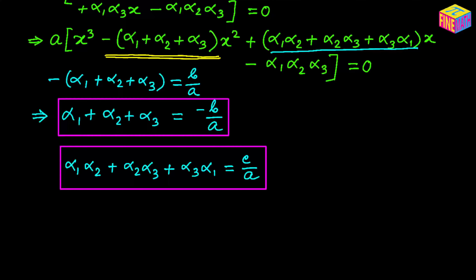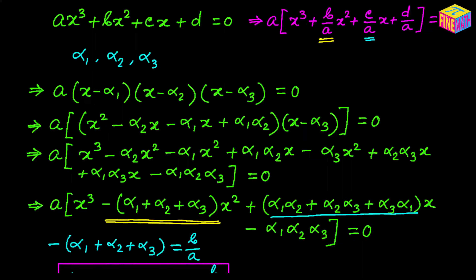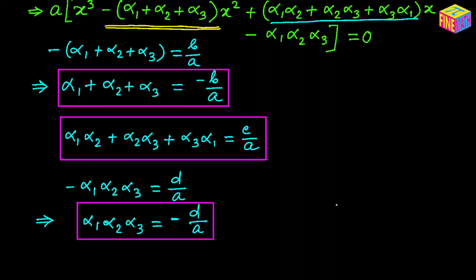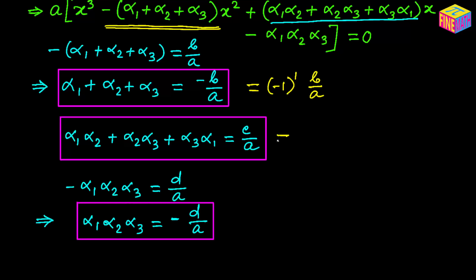Now let's compare the constant term in both forms. In the first form the constant term is positive d over a, and in the second form the constant term is negative alpha sub 1 times alpha sub 2 times alpha sub 3. Now, notice that we can write the sum of roots as negative 1 to the power 1 times b over a, and the sum of products of two roots at a time as negative 1 squared times c over a.